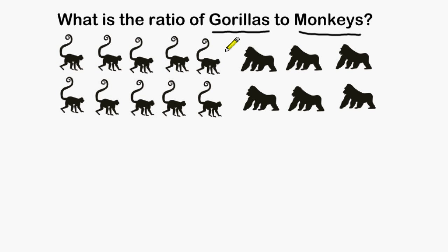Because gorillas is given first, we have to count those first. We can see there are six gorillas in the picture, and then we would say that there are ten monkeys.